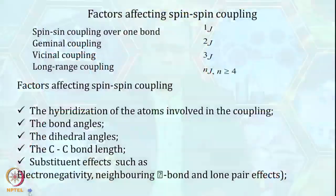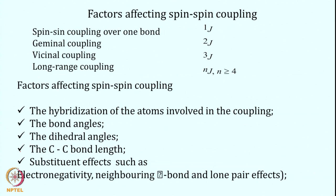Spin-spin coupling over one bond is called J1. If it is two-bond coupling it is called 2J, also called geminal coupling. Three-bond coupling is called vicinal coupling, denoted J3. Long-range coupling involves more than four bonds and is denoted with N as the superscript.